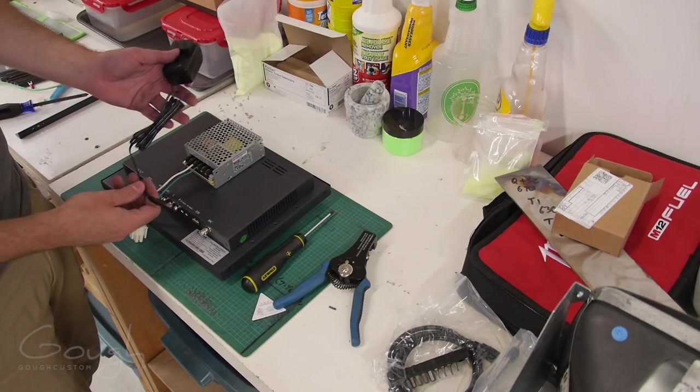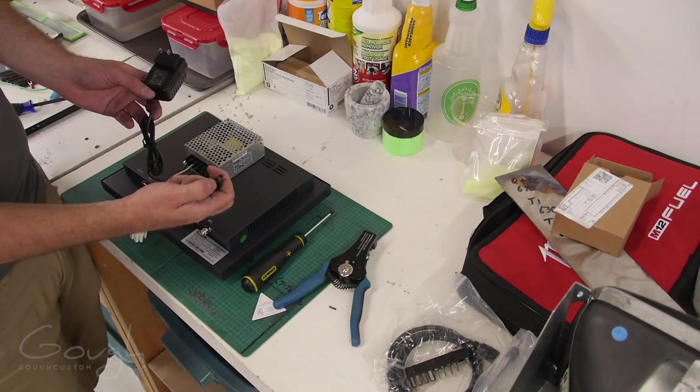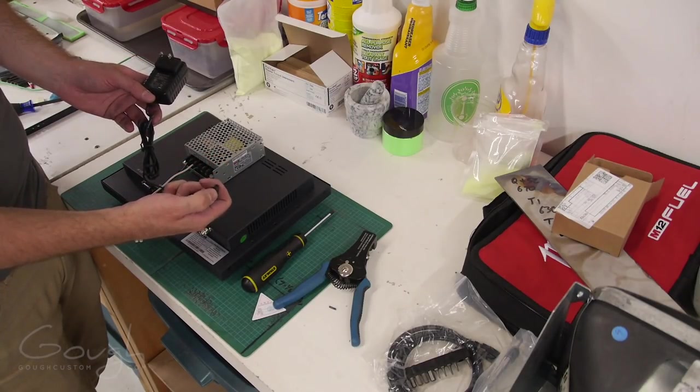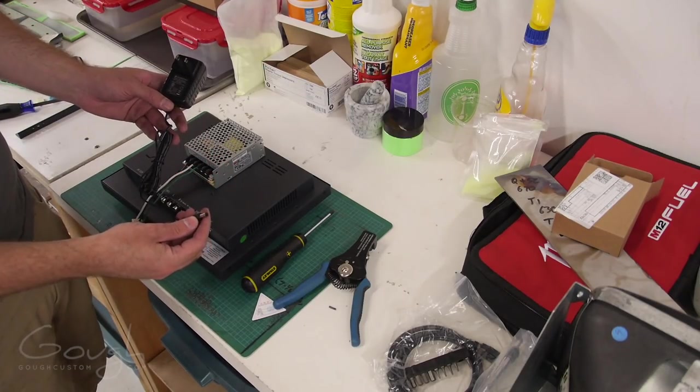All right, and now we need to cut the connector off this guy so that we can connect power from the screen to the power supply. Now usually with these barrel jacks the outside is the negative, but there's actually a really quick way to double check which I'll show you.